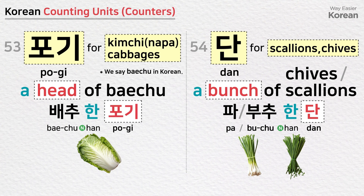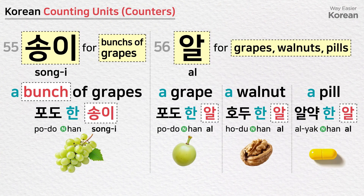단 is a counting unit for scallions or chives: a bunch of scallions — 파 한 단; a bunch of chives — 부추 한 단. 송이 is a counting unit for bunches of grapes: a bunch of grapes — 포도 한 송이. 알 is a counting unit for grapes, walnuts, or pills: a grape — 포도 한 알; a walnut — 호두 한 알; a pill — 알약 한 알.